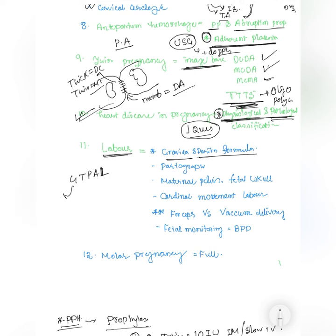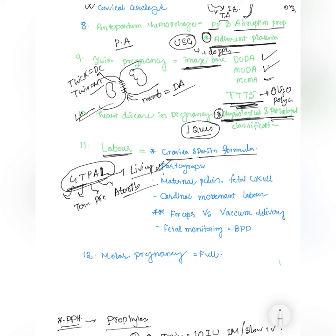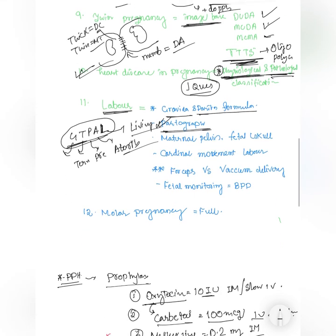You should know obstetric terminology: Gravida is the total number of pregnancies. The TPAL system — T for term pregnancy, P for preterm, A for abortion, L for living issue. Short coding questions can come from this topic. Partograph is also very important and can come in the exam. Maternal pelvis and fetal skull will also be covered in upcoming videos.